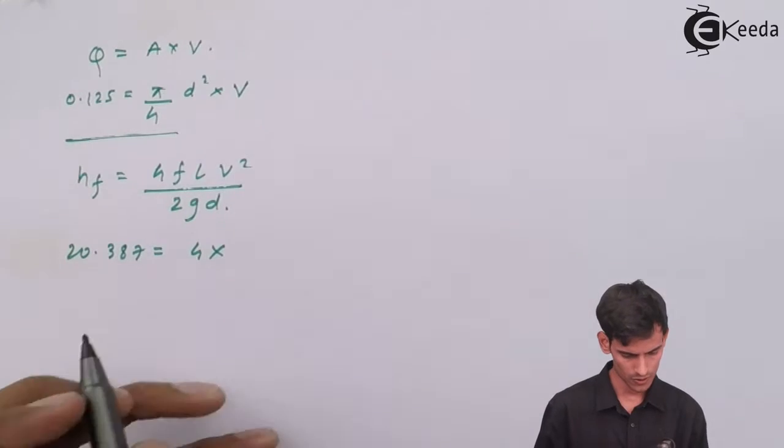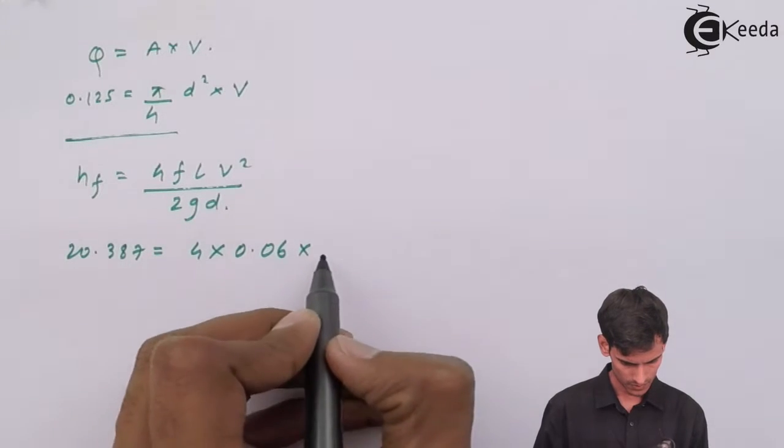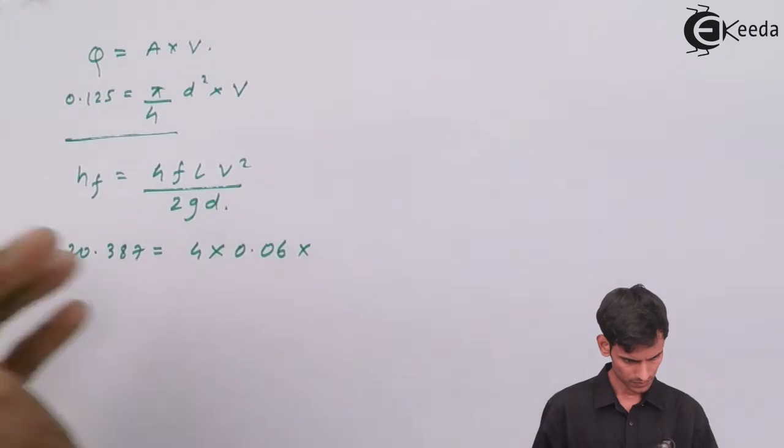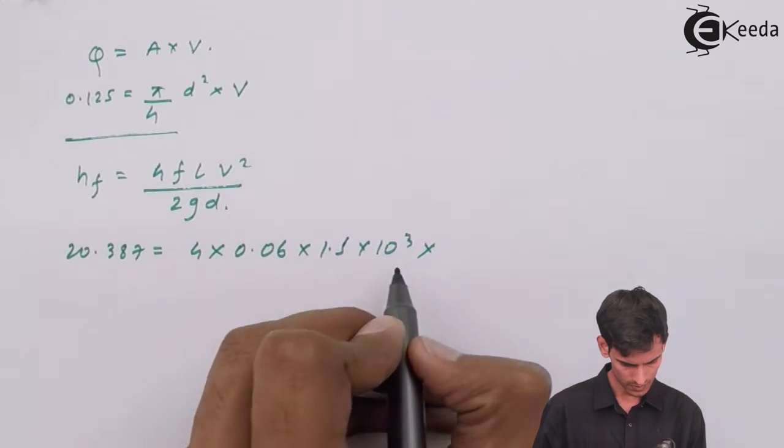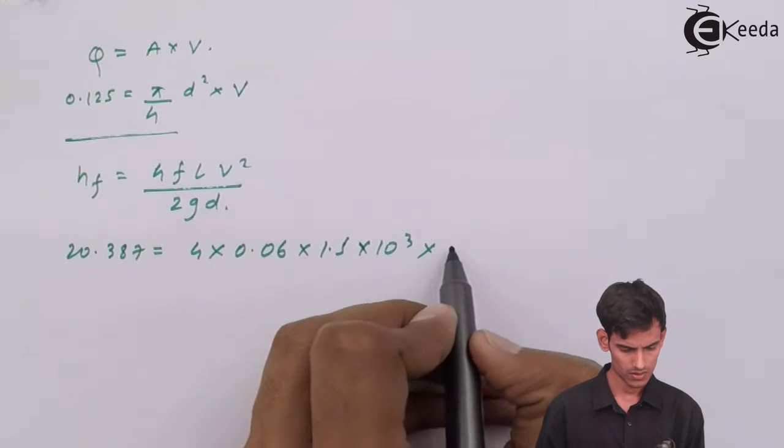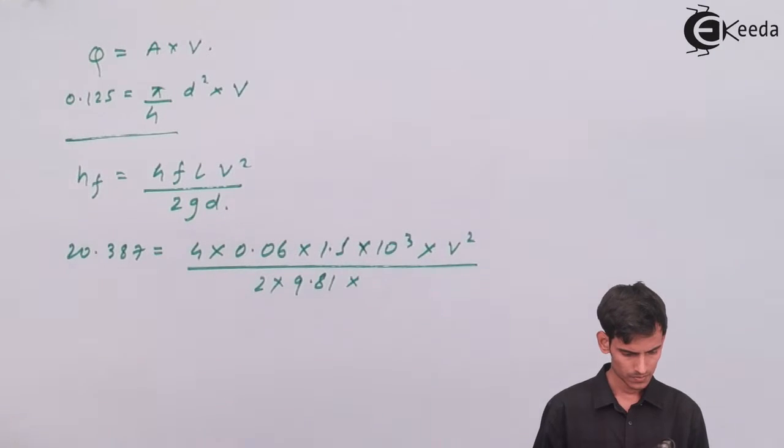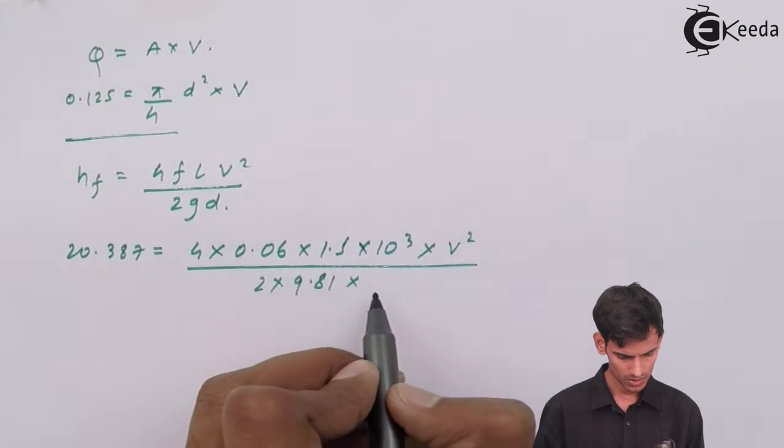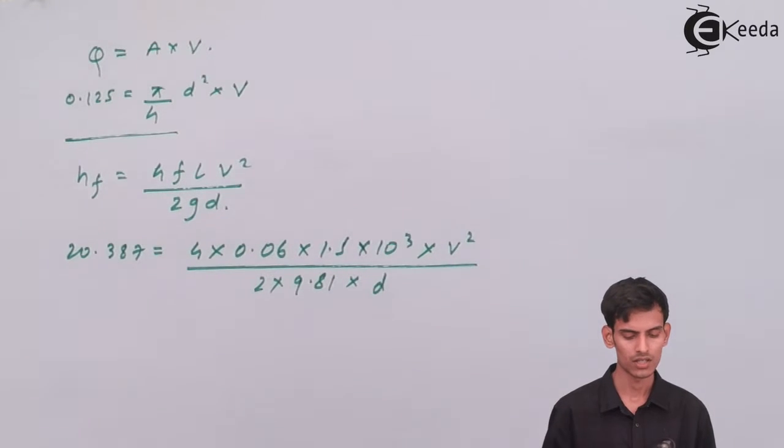So head loss because of friction, that we have already calculated. The friction factor is given in the question as 0.06. The length of the pipe is given to us. Here the only unknown that is left is the diameter. We know the value of discharge, and using discharge you can get the value of velocity. So the only unknown remains is the diameter. Once you shift the terms here and there, you can get the value of the diameter.